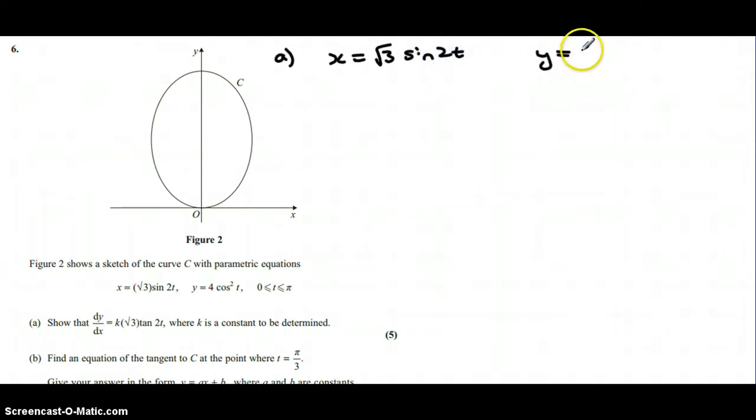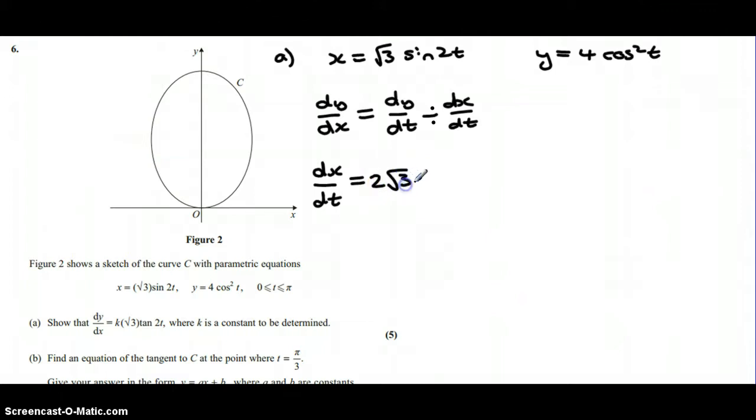In order to find dy by dx, we're going to need to find dy by dt and then divide that by dx by dt. So first of all, if I find dx by dt using the chain rule, I'm going to differentiate the first expression for x. If I use what's inside the function which is 2t, if I differentiate that I get 2 times by the root 3, and then if I differentiate sine I get cos, so that's applying the chain rule.